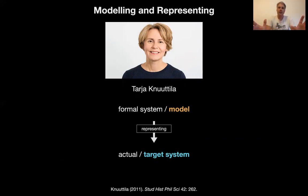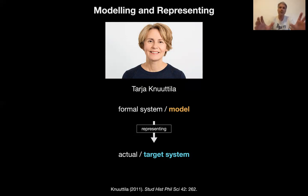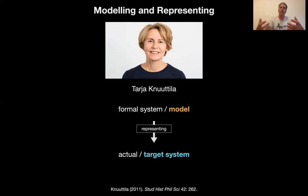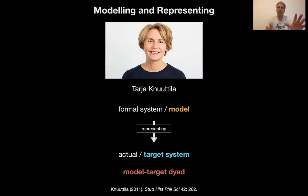She compares two different models of modeling. The simple one — a two-step, two-place model, she calls it — relates a formal system, which she calls a model, to an actual system, which she calls a target system, through the act of representing. Note that when she uses the term model here, it can be something other than a formal system — it can be a scale model, even a model organism — supposed to stand for something more general than they are. This very simple view is based on what she calls a model-target dyad, so the meaning of the model comes out of its relation to the target system.